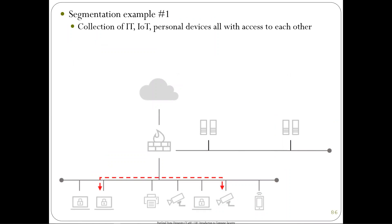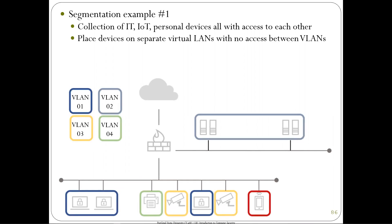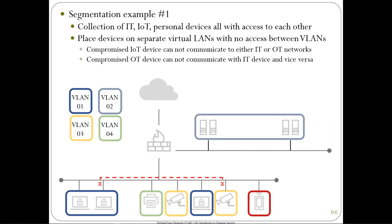Here's another example: you have a collection of IT, IoT, and personal devices — some printers, IoT cameras, personal phones on your network, and a sensitive server infrastructure. Without segmentation, your IoT camera can directly talk to protected employee laptops. With segmentation, you compartmentalize by putting devices on virtual LANs. These are color coded — one VLAN for IT devices, another for printers, another for IoT cameras, another for personal devices, another for servers — and you block the pivot from the camera to the laptop. That's network segmentation.